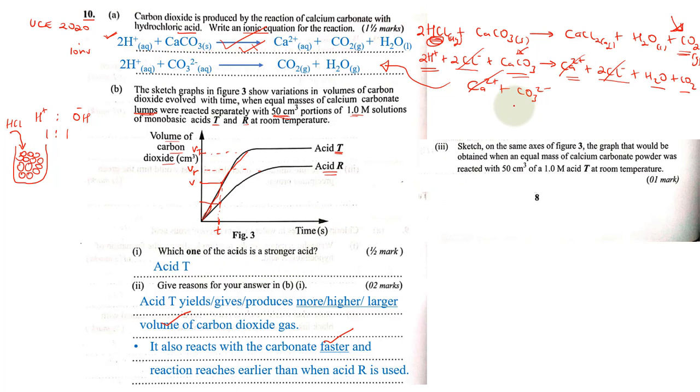Last question: Sketch on the same axis of Figure 3 the graph that would be obtained when an equal mass of calcium carbonate powder was reacted with the same volume, 50 cubic centimeters of 1.0 molar acid at room temperature.